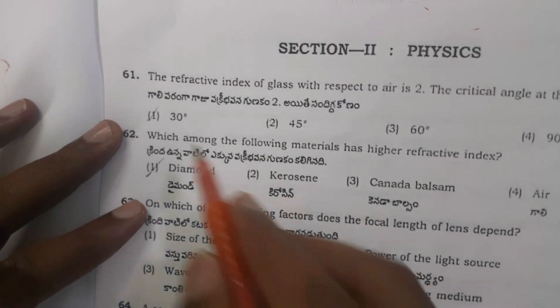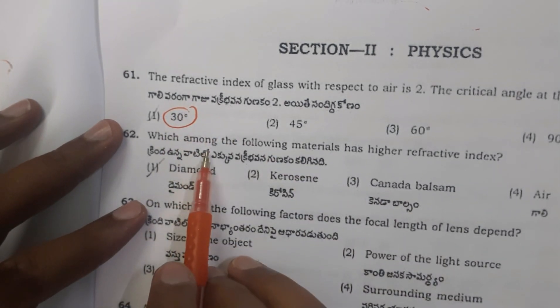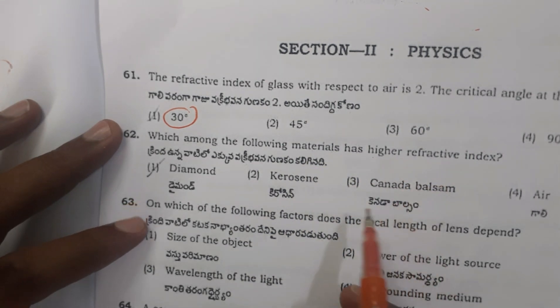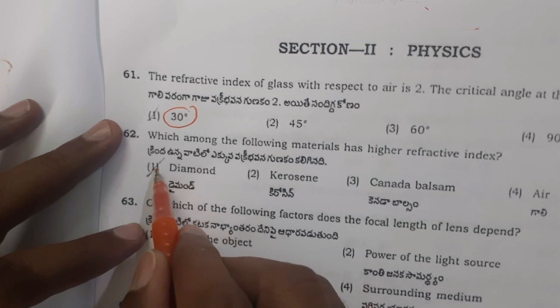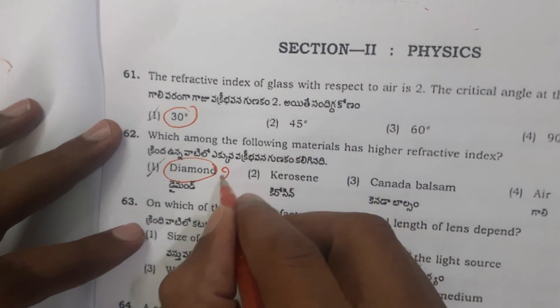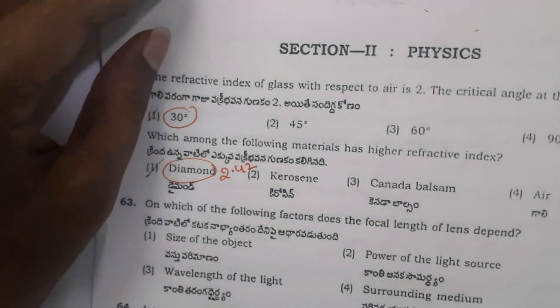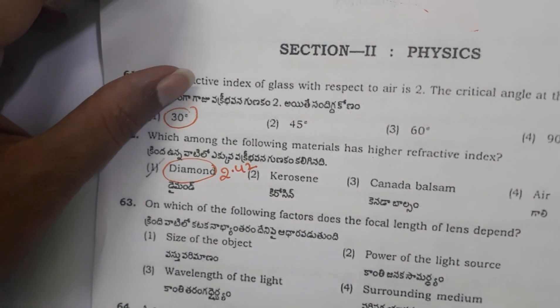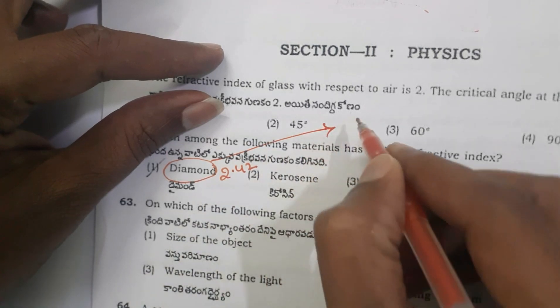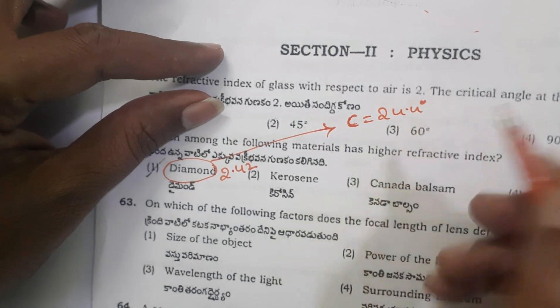So the answer is 30 degrees. Next, question 62: Which among the following materials has higher refractive index? Diamond has higher refractive index at 2.42. When refractive index is higher, critical angle is lower. The critical angle of diamond is 24.4 degrees.